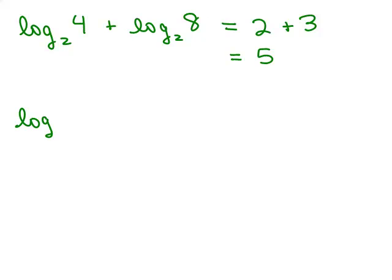Now let's see if this makes sense. If I would have written this first as a single log. So that would be the log base 2 of, and what do I have to do? I multiply those two together, which is 32.